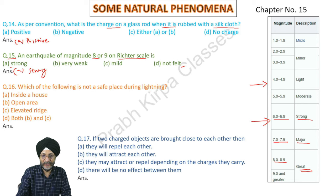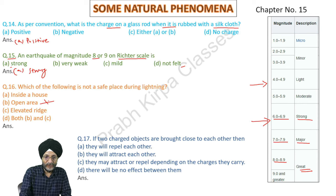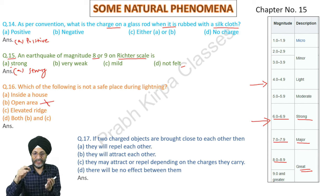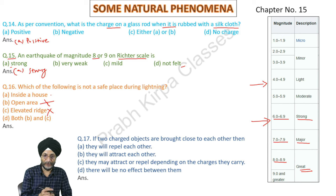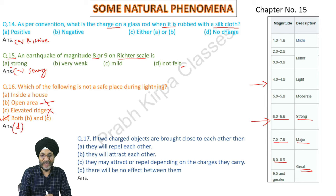Which of the following is not a safe place during lightning? If we are in an open area, it is quite possible we may be struck by lightning — open area is not safe. If we are on an elevated ridge such as a mountain or hill range at height, that is also not safe. But if we are inside a house, we may be safe. So both open area and elevated ridge are not safe places during lightning — answer is both B and C.